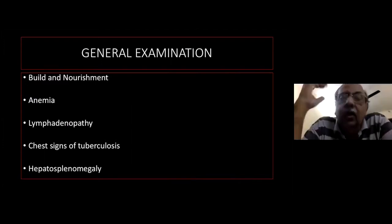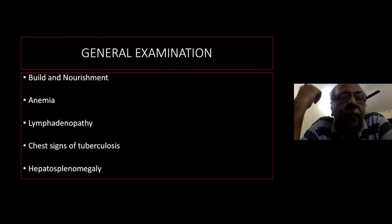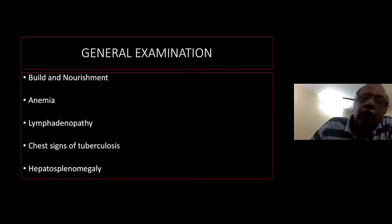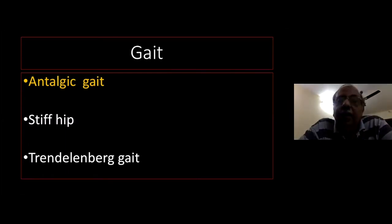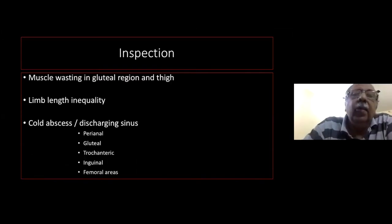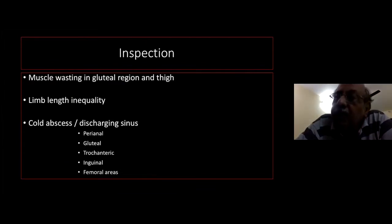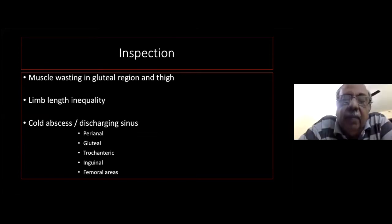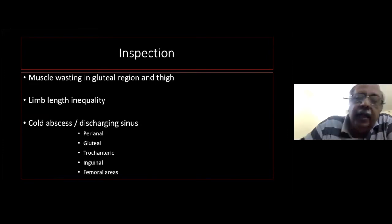On general examination, patients are usually poorly nourished with a characteristic look. Anaemia may be associated. They may have lymphadenopathy, especially in the deep inguinal and external iliac glands. Always look for hepatosplenomegaly. Regarding gait: in early stages they will have an antalgic gait; in late stages, a stiff hip gait; and in unstable hips, a Trendelenburg gait. On inspection, there will be gross wasting of the gluteal and thigh muscles. Cold abscess and discharging sinus may be present in the perianal, gluteal, trochanteric, inguinal, and femoral areas.